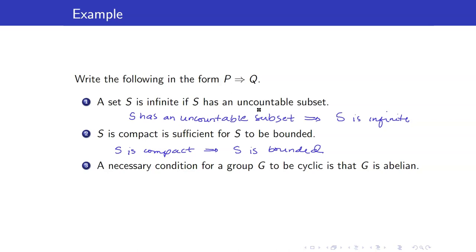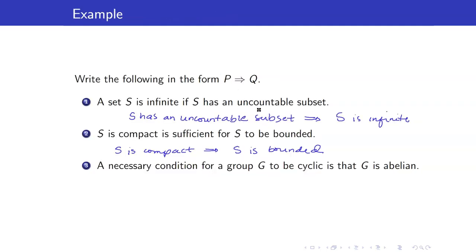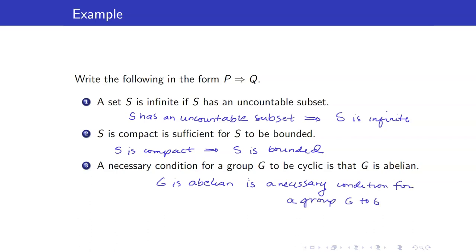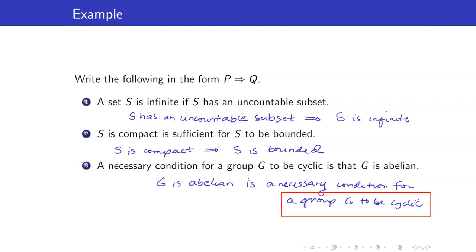Next: a necessary condition for a group G to be cyclic is that G is abelian. Q is necessary for P means the necessary condition is Q. The necessary condition here is that G is abelian. So the premise is the second part: if G is cyclic, then G is abelian.